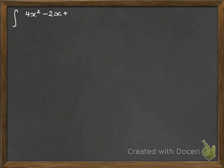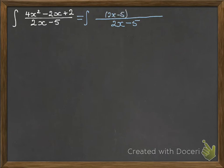Okay, so another example here. We've got 4x squared minus 2x plus 2 over 2x minus 5. So a little bit more work to do on this one. We've got a few more terms. So first we think about taking out that 2x minus 5.